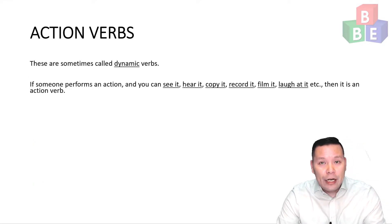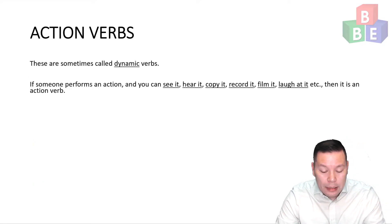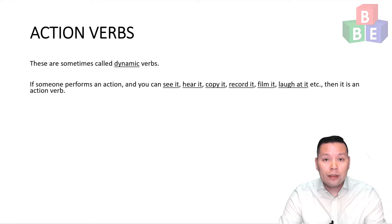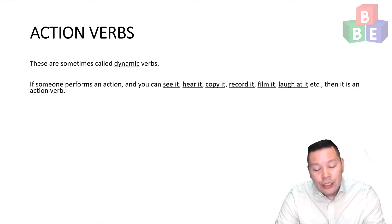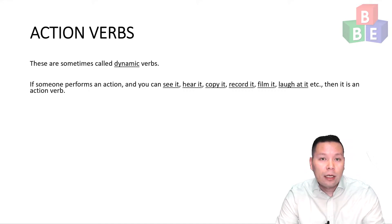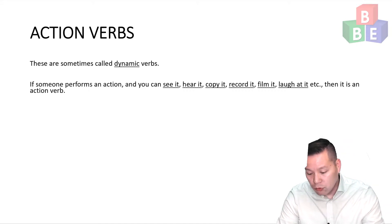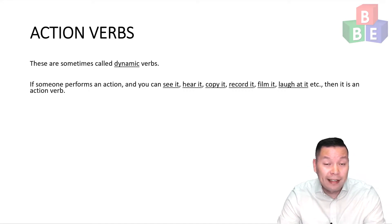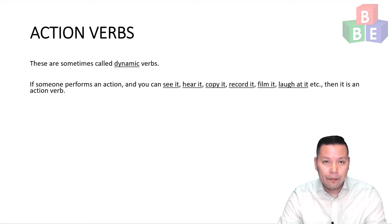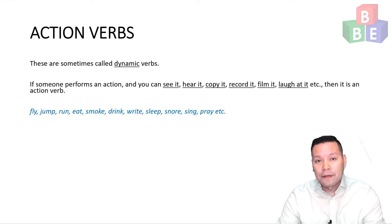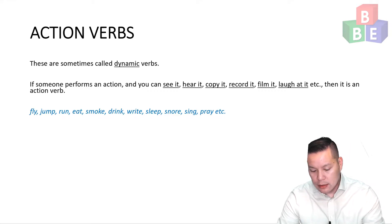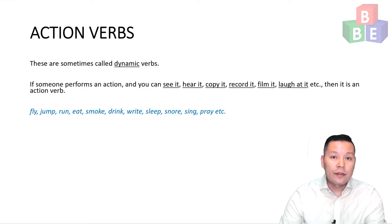Let's talk about action verbs. Action verbs are sometimes called dynamic verbs. If someone performs an action and you can see it, hear it, copy it, record it, film it, or even laugh at it, then it is an action verb. Some examples include fly, jump, run, eat, smoke.